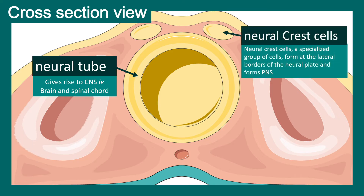And these are the neural crest cells — a specialized group of cells which are capable of giving rise to many cell types, including cells of the peripheral nervous system. In a different video we'll talk about neural crest cells in detail, but right now we are focusing on the process of neurulation.